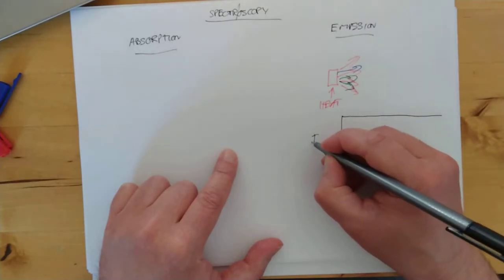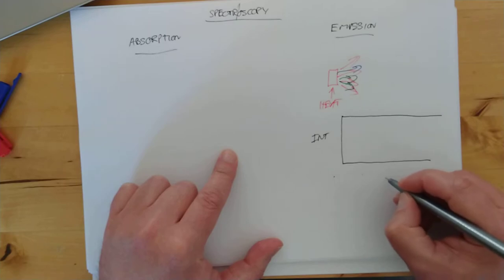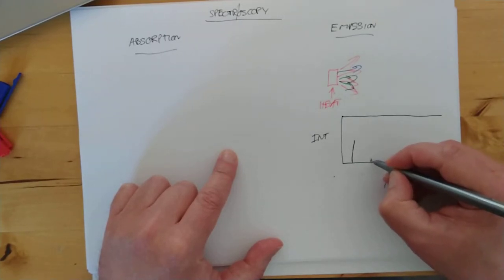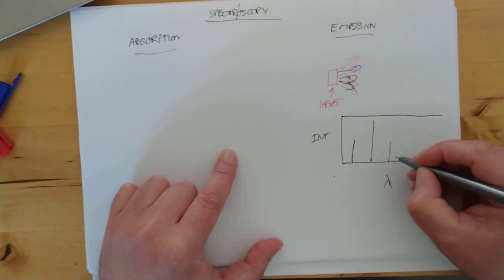We'll have, say, intensity here, and wavelength here, and you get spikes of varying intensities and at very specific wavelengths.